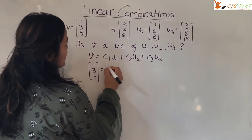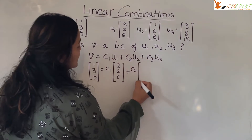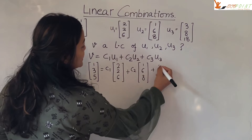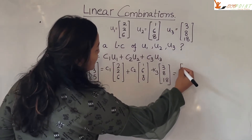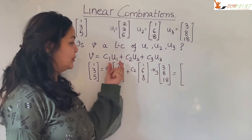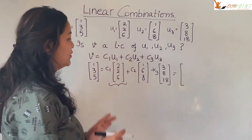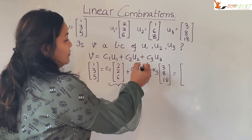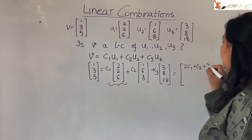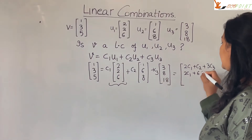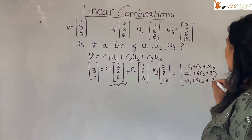To check this, substitute: [1, 3, 5] = c1·[2, 2, 6] + c2·[1, 6, 8] + c3·[3, 8, 18]. When you multiply a scalar with a vector, for example c1 times [2, 2, 6] becomes [2c1, 2c1, 6c1], and you add up the respective positions. This gives you the system: 2c1 + c2 + 3c3 = 1, 2c1 + 6c2 + 8c3 = 3, and 6c1 + 8c2 + 18c3 = 5.